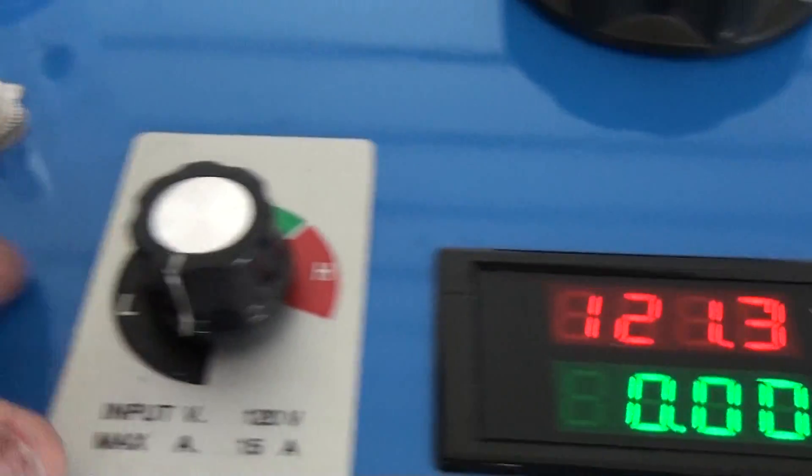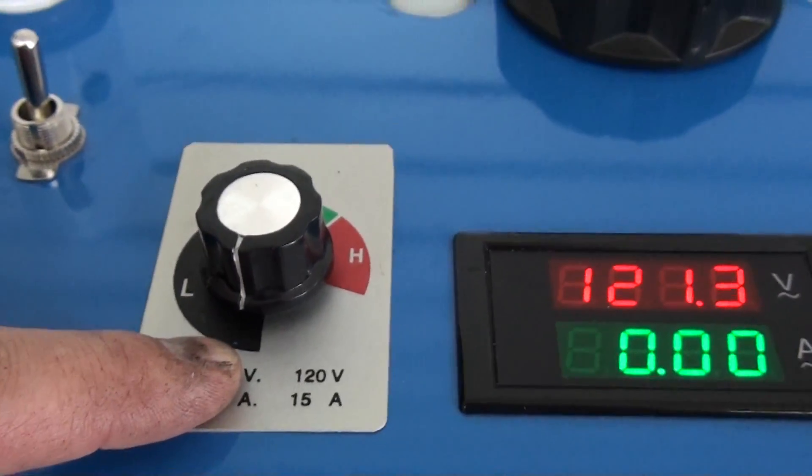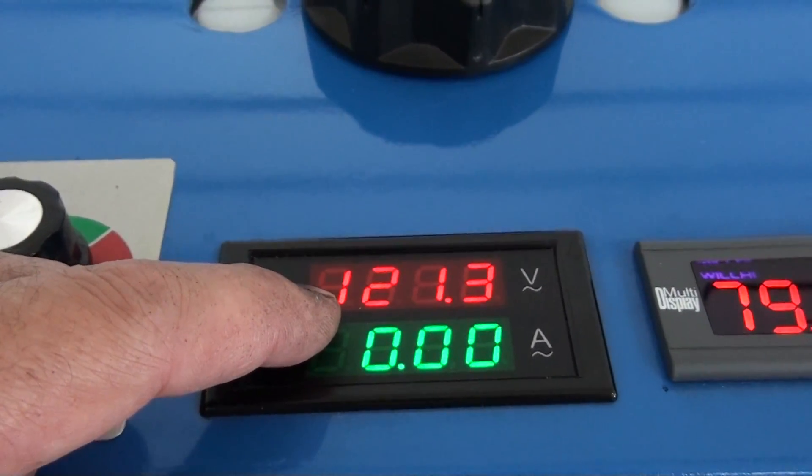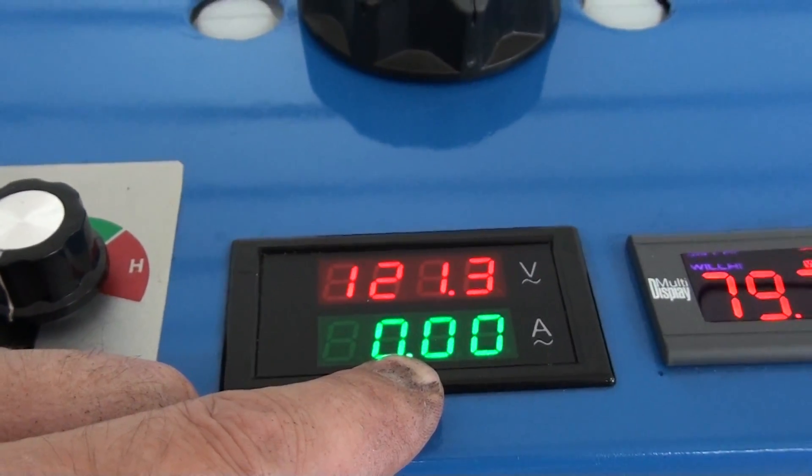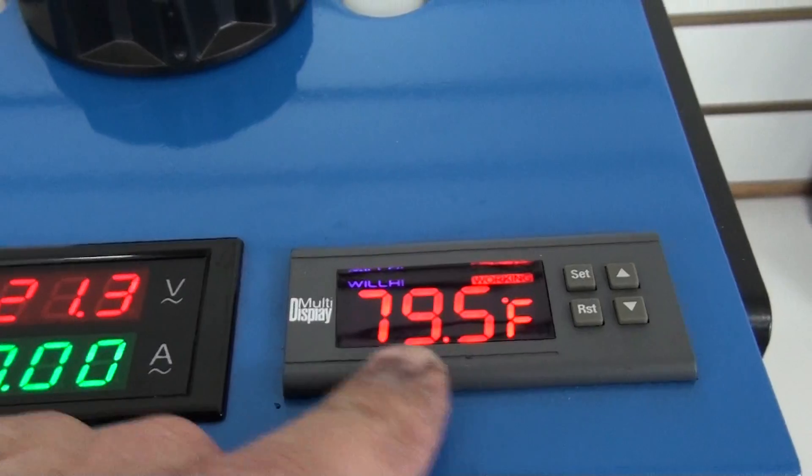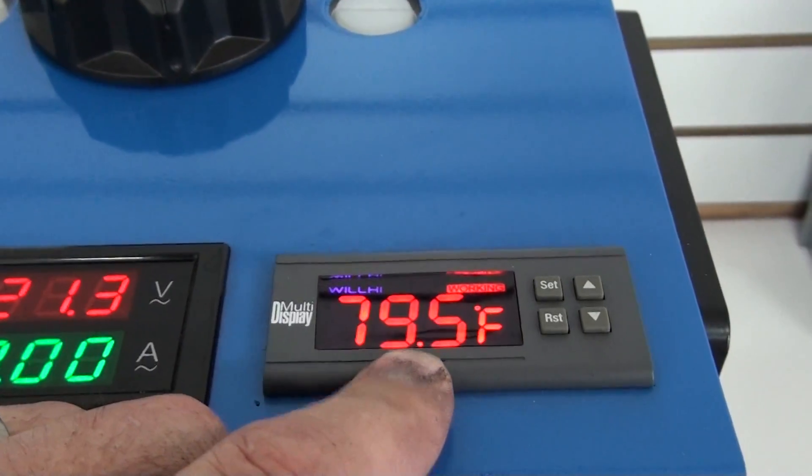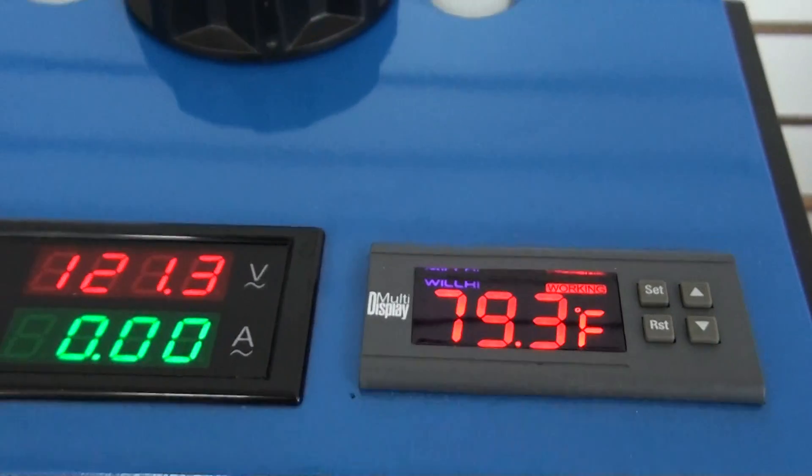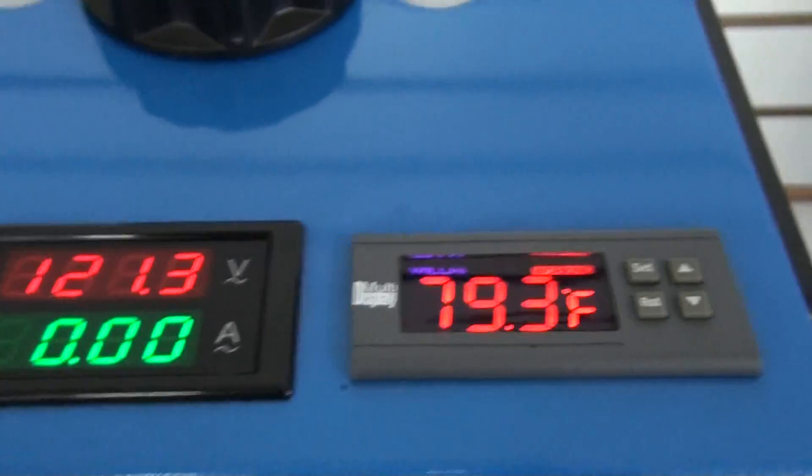So right here you have your knob that increases the production of the generator. And over here it will show how many volts are on the input and how many amps you're using. This here is our temperature control. This can be set to a preset temperature where it will shut down the whole system if it overheats.